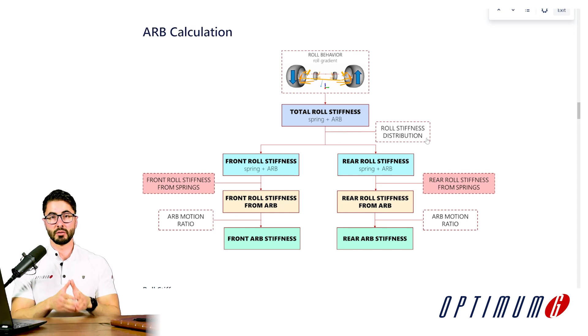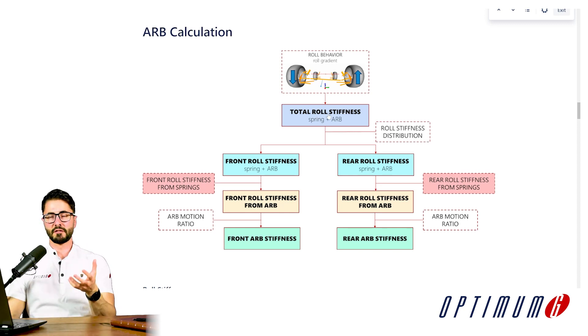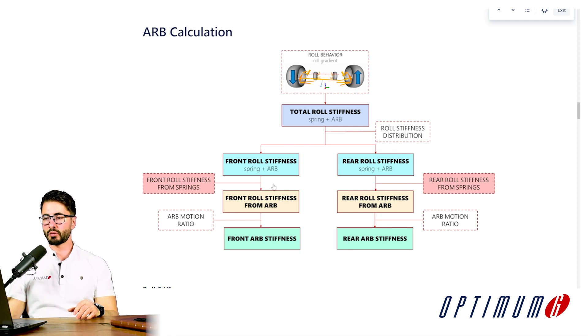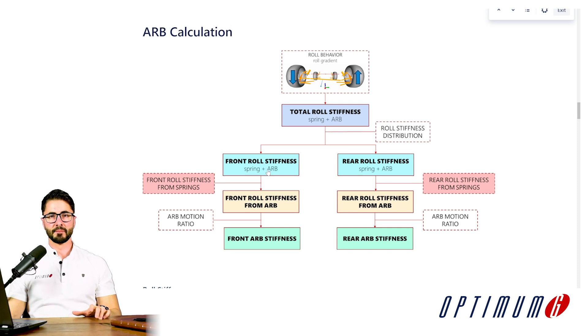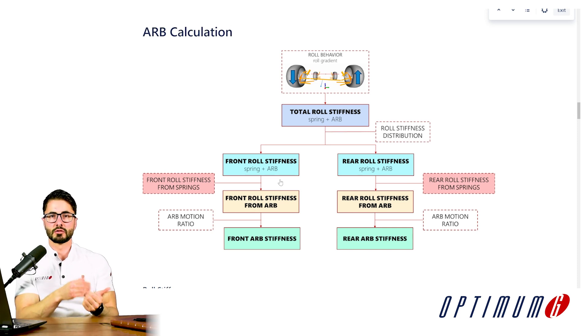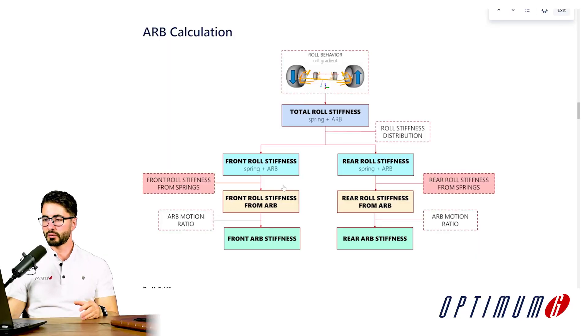In our example, we are going to assume a roll stiffness distribution of 57%. So if the total roll stiffness is a calculated number and 57% should be on the front axle, we can calculate how much roll stiffness we have on the front and how much on the rear. This comes from both springs and anti-roll bars at the same time. But here is where things get easy — because we already know how much roll stiffness we would like on the front axle, and we already calculated the springs.